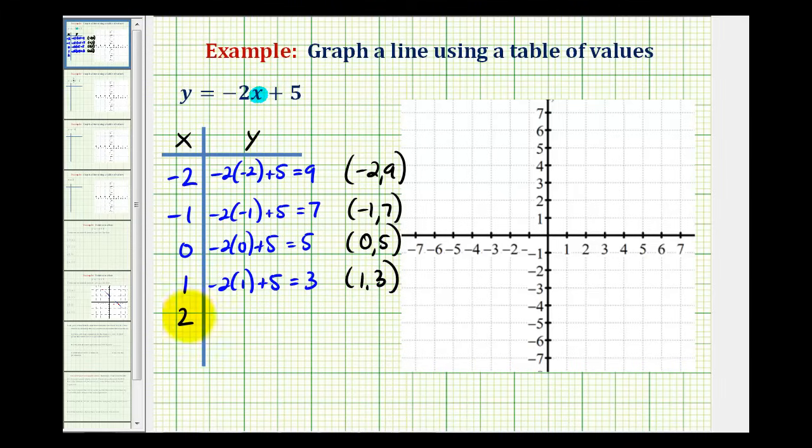And then the last x value we selected was positive two. So y is equal to negative two times two plus five. Well this would be negative four plus five, which equals one. So the line should also contain the point two, one.